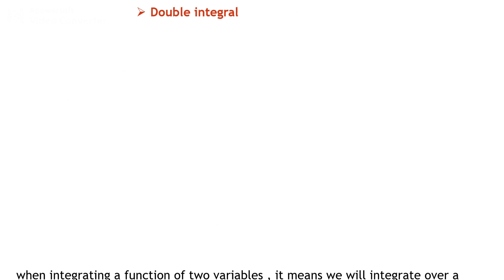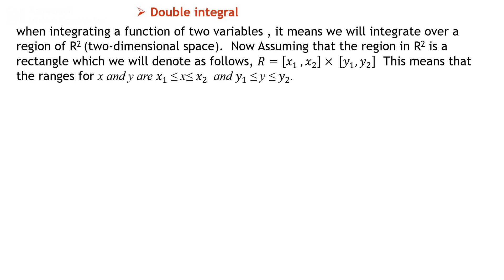Now for the double integration: when we integrate a function of two variables, it means we integrate over a region in R², that is two-dimensional space. Assuming the region is two-dimensional and is a rectangle, we denote it as the region with x from x₁ to x₂ and y from y₁ to y₂. This defines the range of x and y.